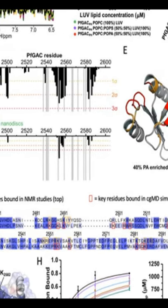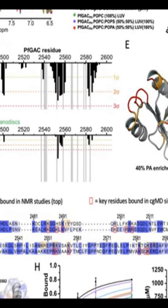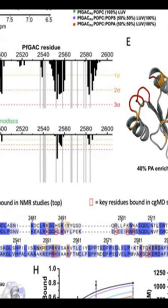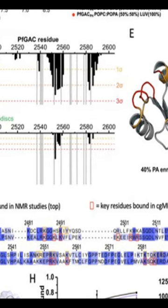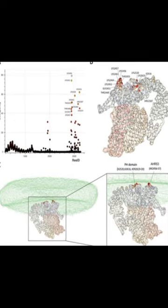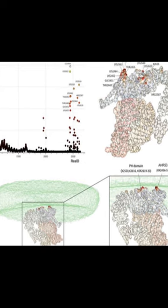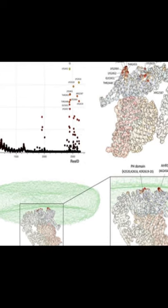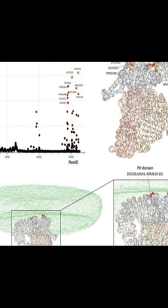This process requires the glidiosome-associated connector, GAC, which is composed of a conserved protein essential to this process. GAC facilitates the association of actin filaments with surface transmembrane adhesins and the efficient transmission of the force generated by myosin translocation of actin to the cell surface substrate.